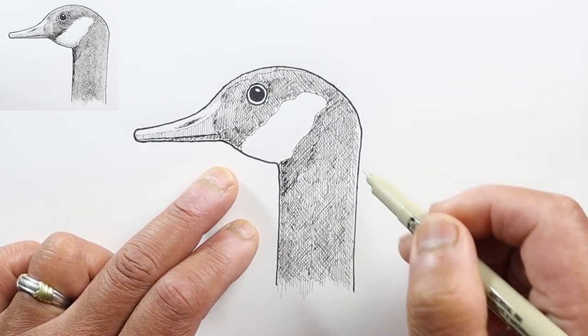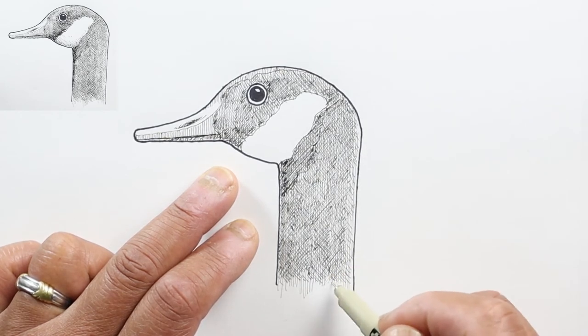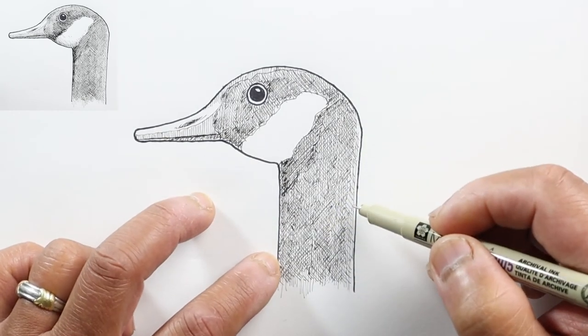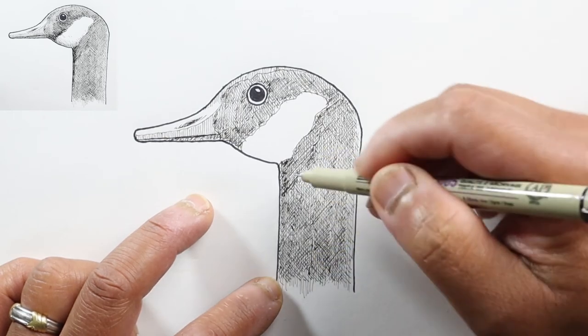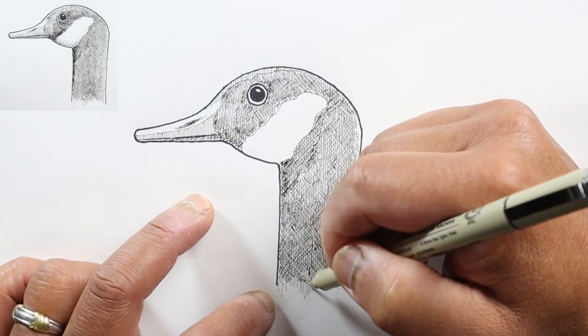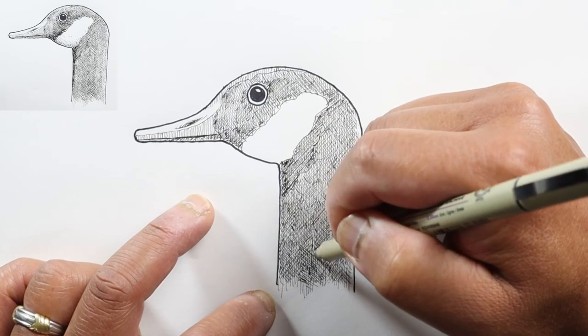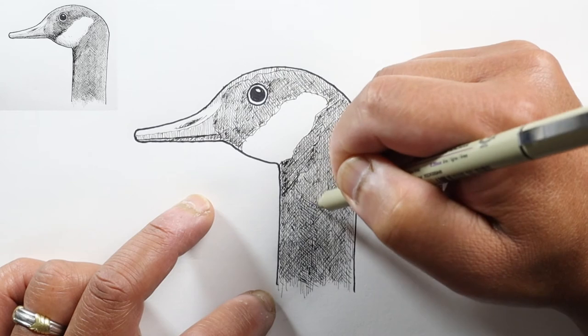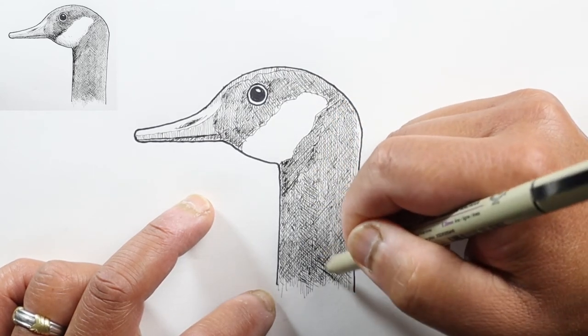I'm going to leave this right side without this set of lines just to keep that a little bit lighter. I'm going to add more tone right here in the center. Now I'm going to go yet a different direction just to add more tone here, make this center area darker.